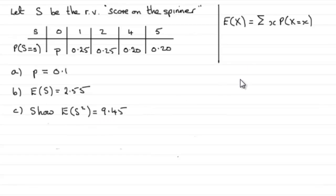Now E of S squared is related to E of X squared, which you'll see also in your formula book. E of X squared is equal to the sum of X squared multiplied by the probability that X equals X.